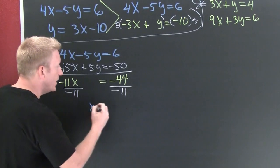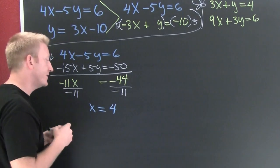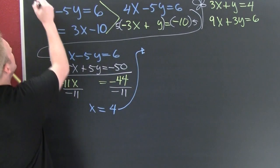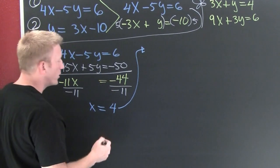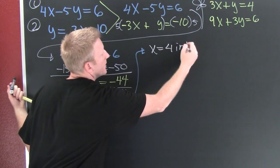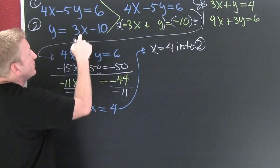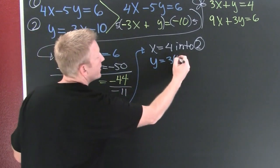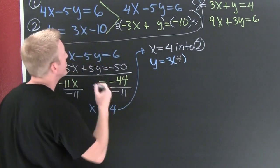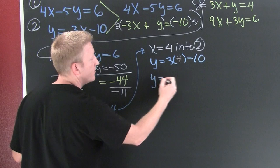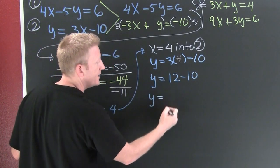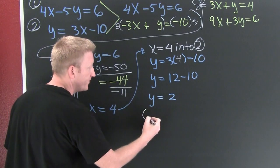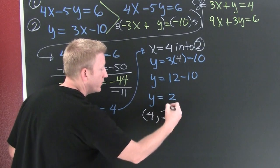It appears x is equal to 4. Now I'm going to plug that into one of the originals — equation 2 — because it's already quite nice. Everywhere in equation 2, y equals 3 times x. X is now 4, so y equals 3 times 4 minus 10. That's 12 minus 10. And y is 2. The solution to a system is a point, so my x value was 4 and my y value was 2: the point (4, 2).